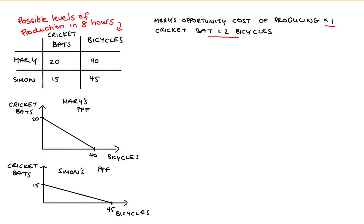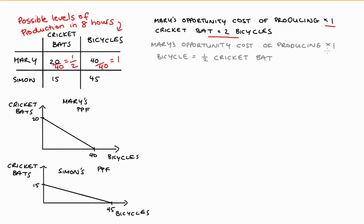We can do the same process for bicycles. If Mary makes 40 bicycles, she doesn't make 20 cricket bats. Normalizing that trade-off to one bicycle: 40 over 40 equals one, and 20 over 40 equals a half. So Mary's opportunity cost of producing one bicycle is equal to half of a cricket bat.